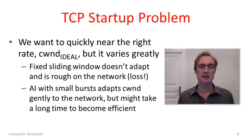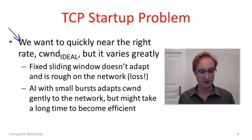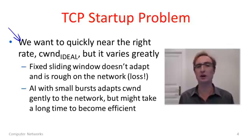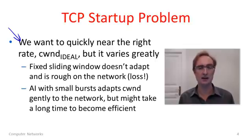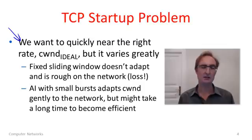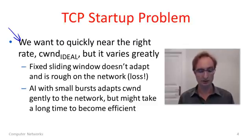The problem in implementing additive increase directly with the congestion window, which slow start will solve, is this. We want to fairly quickly get the size of the congestion window to be somewhere near the ideal congestion window, which gives us the right rate. If we're hovering near there and oscillating, that's where AIMD ends up, giving us a good bandwidth allocation. But that ideal can vary greatly depending on the RTT and the link rate, so we really don't know a priori what it should be.